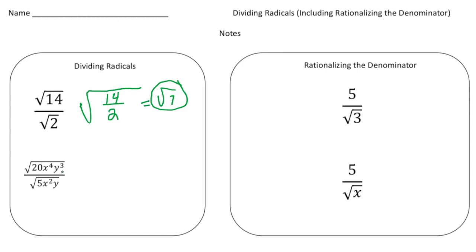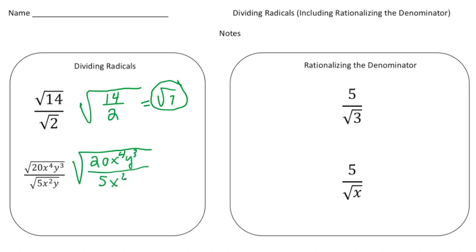This one down here is a little more complex. Here we have the square root of 20x to the 4th, y to the 3rd, divided by the square root of 5x squared and y. But you do the same thing as before — we're going to create a big radical sign with 20x to the 4th, y to the 3rd in the numerator over 5x squared y in the denominator.